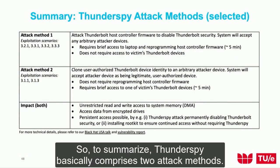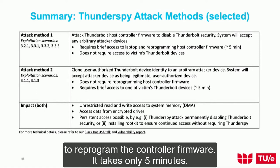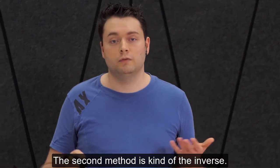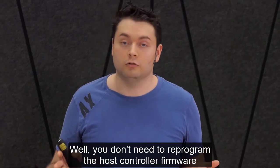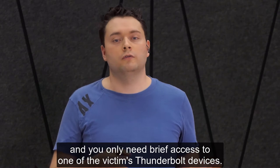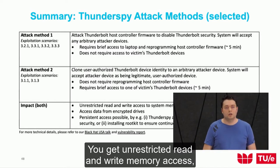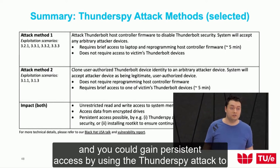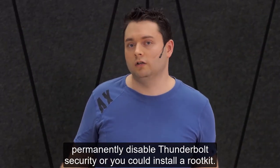To summarize, ThunderSpy comprises two attack methods. The first requires brief access to the victim's system to reprogram the controller firmware — this takes only five minutes and does not require access to any of the victim's devices. The second method is the inverse: you don't need to reprogram the host controller firmware, you only need brief access to one of the victim's Thunderbolt devices. The impact is the same for both: unrestricted read and write memory access, access to data from encrypted drives, and the ability to gain persistent access by permanently disabling Thunderbolt security or installing a rootkit.